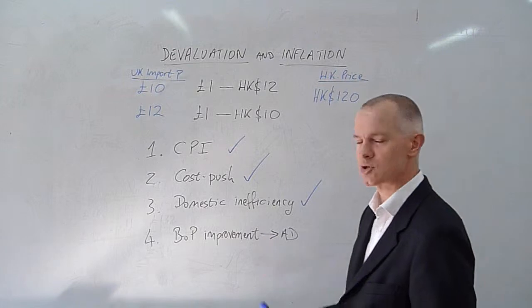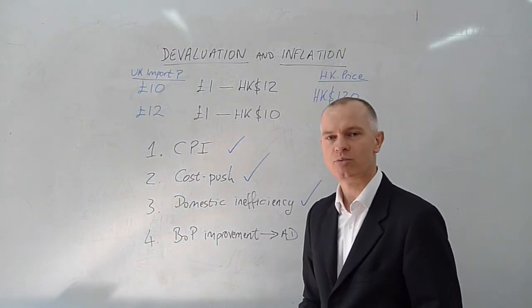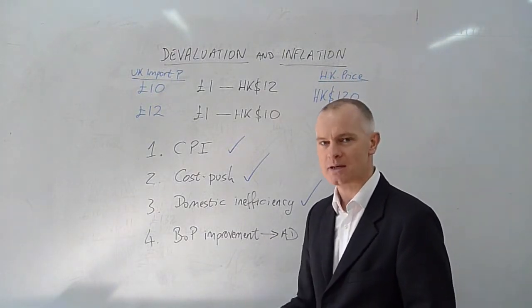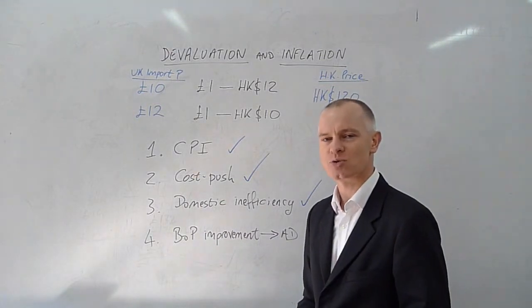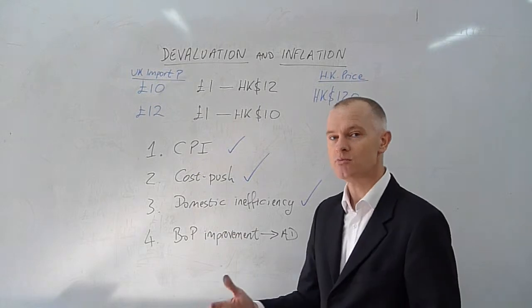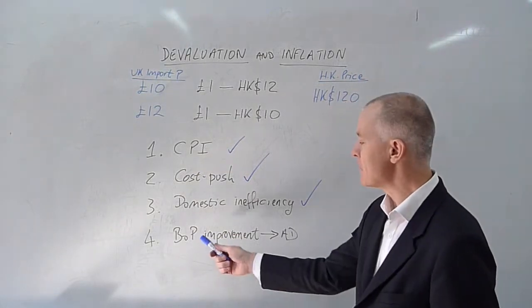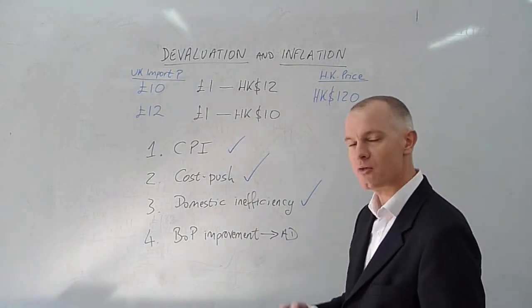It is, of course, entirely possible that the balance of payments improves. This is dependent upon the Marshall-Lerner condition, that domestic elasticities of exports and imports are sufficiently high to improve the balance of payments. But if the balance of payments improves, then other things equal, aggregate demand will rise.